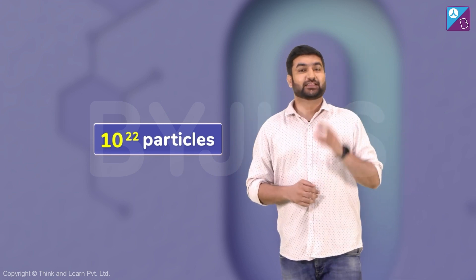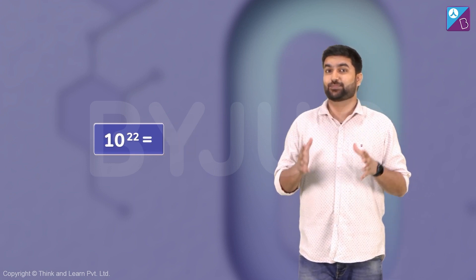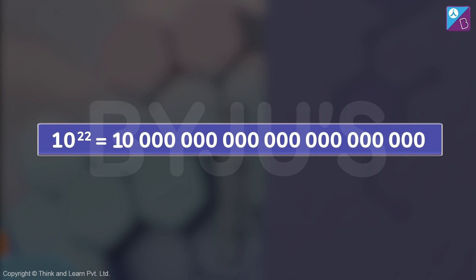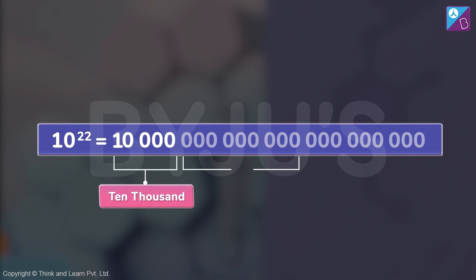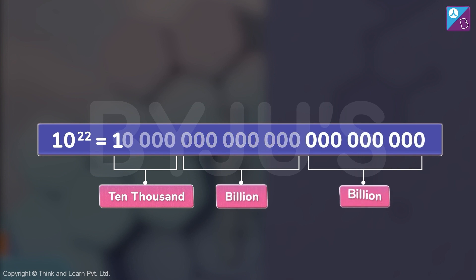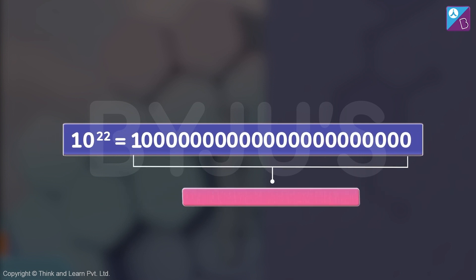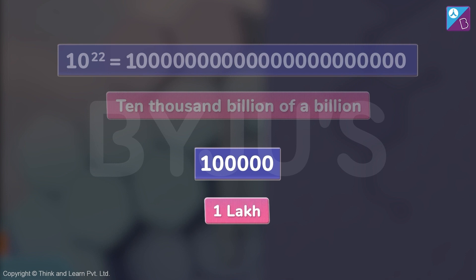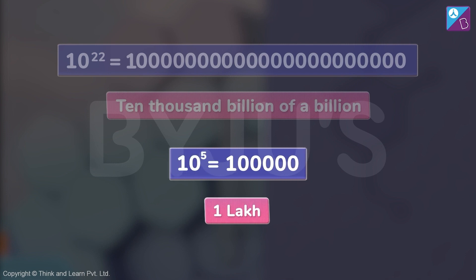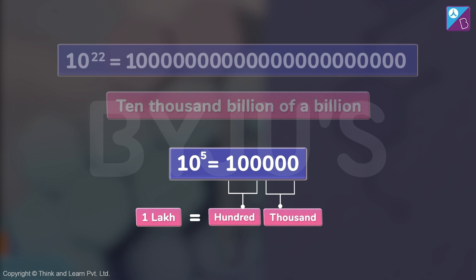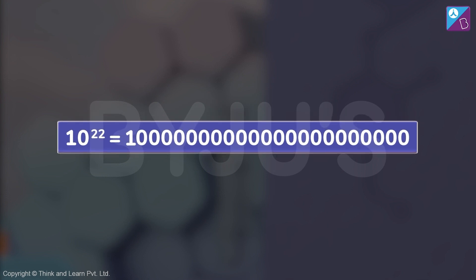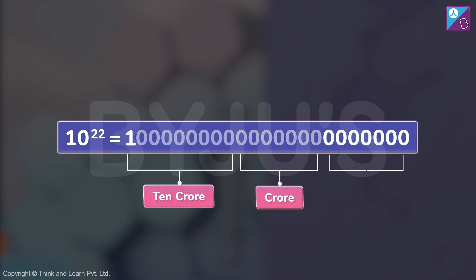To better understand the enormity of this number, let me spread it out. That's 10,000 billion of a billion. Again, get how huge it is? Look at it another way — say I have a lakh, that's about 10 to the power 5, also called 100,000. And this number here is 10 crore of a crore of a crore.